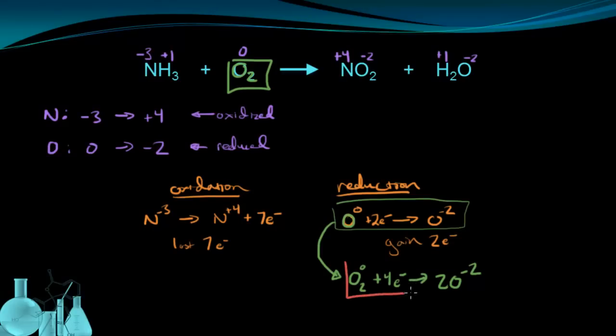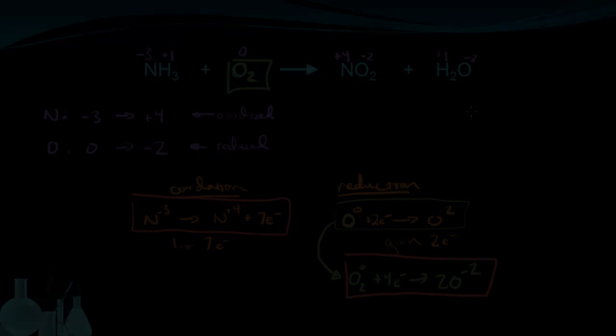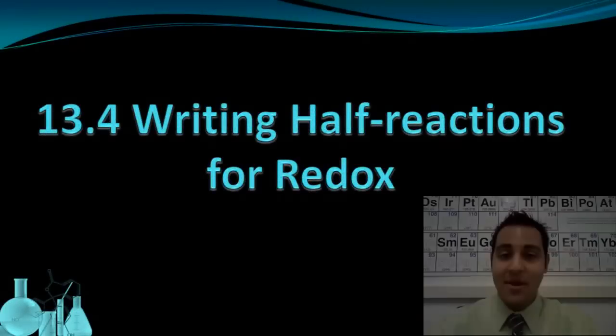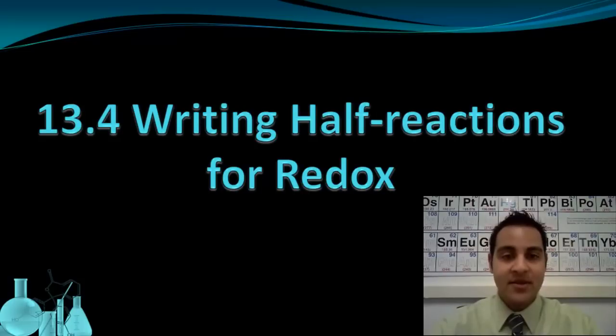So now we have our two half reactions, one for reduction and the other for oxidation. It's important to remember to adjust the half reaction whenever you have a diatomic involved. In the next video, we'll see how we can use these half reactions, the ones we actually made just now, to balance this original equation. That wraps up our lesson on writing half reactions for redox. Write down any questions you have in your notes and bring them with you to class.